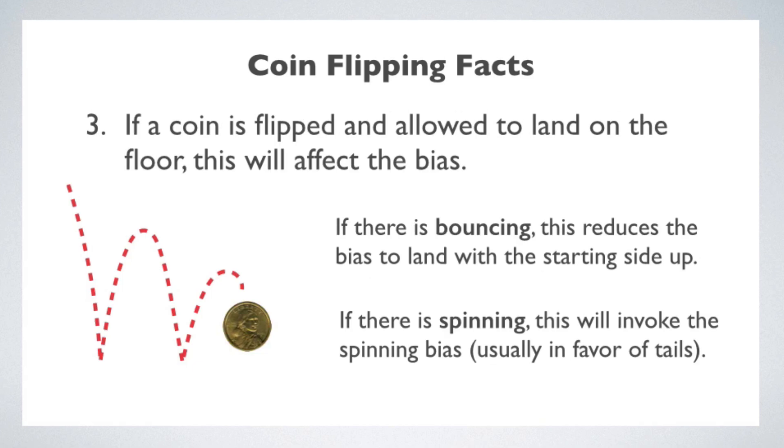Fact number three. If a coin is flipped and allowed to land on the floor, this definitely has an effect on the bias. In general, if there's bouncing involved, then the bouncing can wash out a good deal of the initial position bias. However, if the coin ends up spinning on the floor before it settles, then the spinning bias kicks in and it makes it much more predictable which way it will fall.